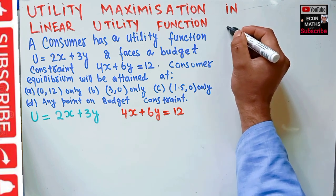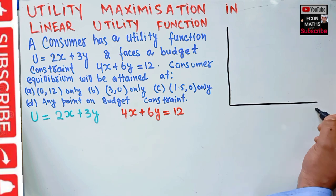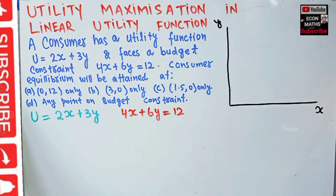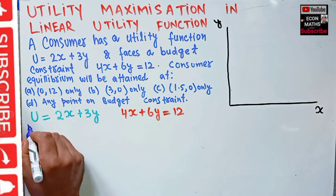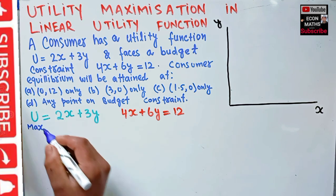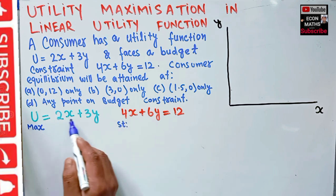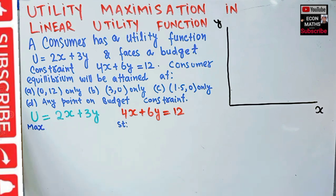Let's draw the graph here to make more sense. We have units of good x on the horizontal axis and units of good y on the vertical axis. The consumer wants to maximize this utility function subject to the budget constraint — given the budget constraint, the consumer wants to reach the highest possible indifference curve.